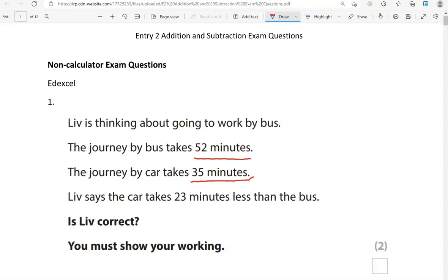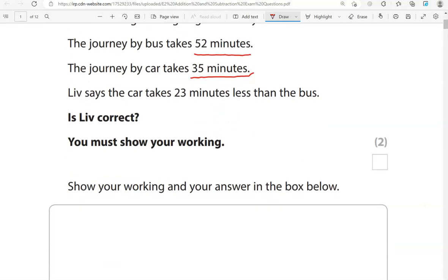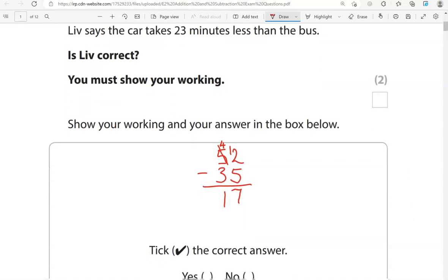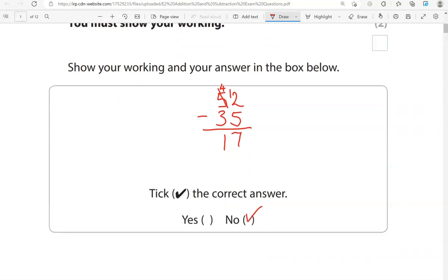So we're comparing the bus and the car journey. The bus journey takes longer, so it's 52 minutes. And the car journey takes 35 minutes. Let's work this out. We need to take away 5 from the 2, starting with the units. That means we need to borrow 1 from the 5, so this becomes 12. 12 take away 5 gives us 7. 4 take away 3 gives us 1. So that is 17 minutes, not 23. So is Liv correct? We're going to say no, and we've shown why by doing the calculation.